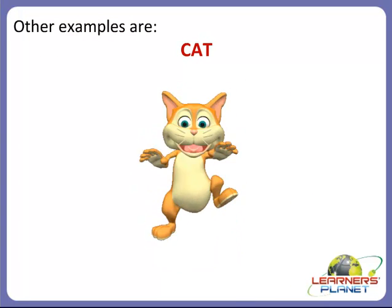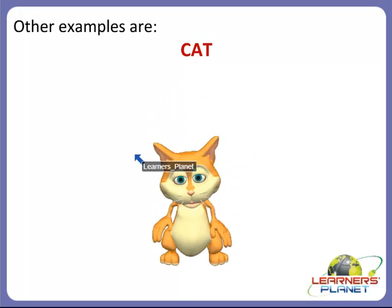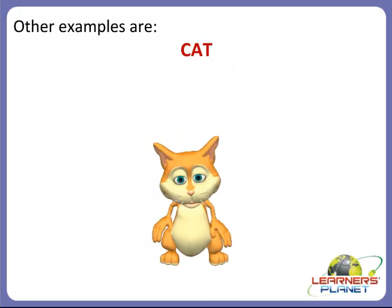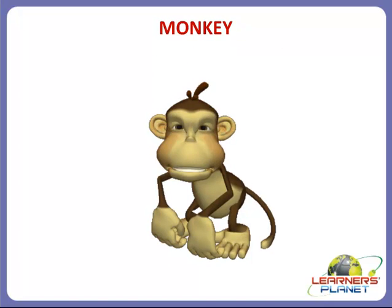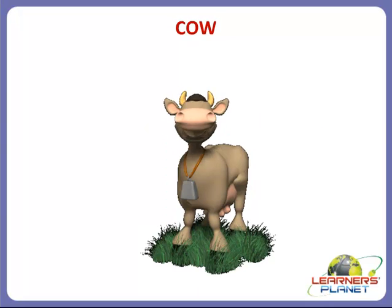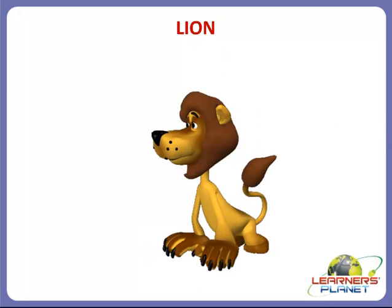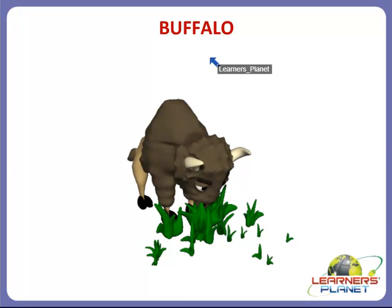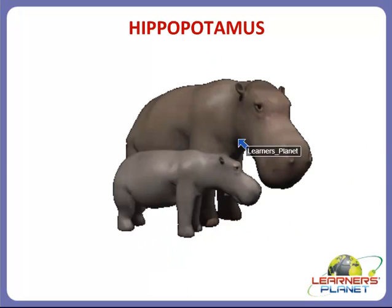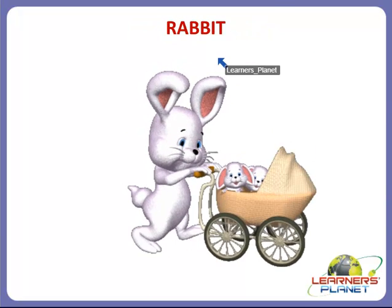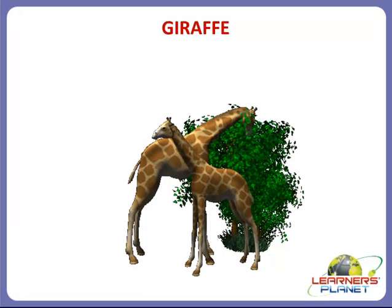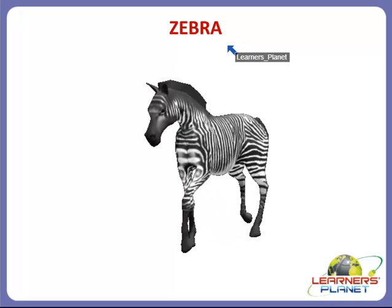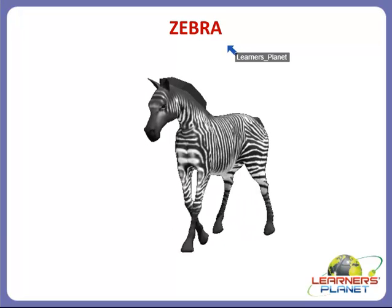Some examples of mammals are: human beings, cat, monkey, deer, cow, lion, elephant, buffalo, hippopotamus, rabbit, and giraffe. These are some common examples of mammals.